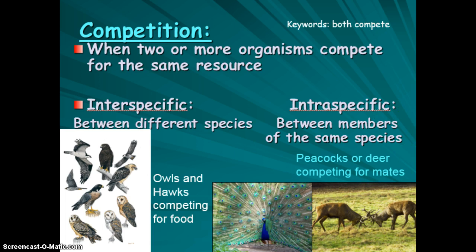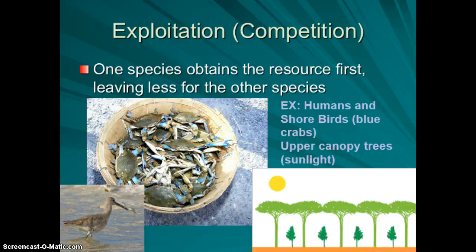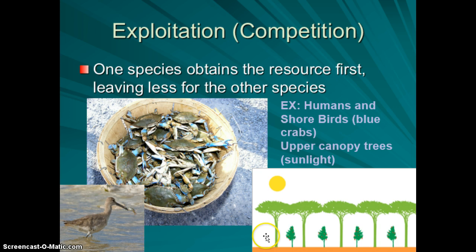Intraspecific competition often involves competing for mates, sometimes through fighting or different colorations. There are also two major mechanisms of competition. Exploitation is when one species obtains a resource first and uses it all up, leaving less for others. Humans are a classic example — we exploit resources like blue crabs, leaving less for native shorebirds. Canopy trees competing for sunlight often outcompete lower canopy trees this way.